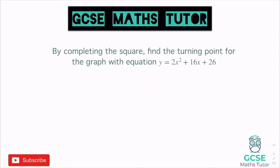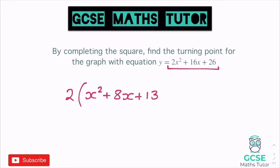So when it comes to this question, this is what we're going to complete the square for, and we're going to find the turning point. We've got the quadratic 2x squared plus 16x plus 26. Now we have to get the coefficient of x squared to be 1 first before going about completing the square. So what we're going to do is we're going to factorise it by a factor of 2. As they all divide by 2, we're going to take a factor of 2 out. So if I factorise this by 2, I get 2 lots of: dividing everything by 2, we get x squared, 8x, and 13 at the end.